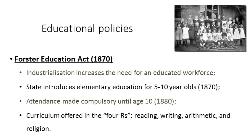This is because the state spent no money on education and did not feel it was its role to do so. In 1870, this all changed with the implementation of the Forster Education Act. Industrialisation had increased the need for an educated workforce, and so the state introduced elementary education for five to ten year olds. Attendance was made compulsory until age ten in 1880, and the curriculum offered a very basic understanding of what was known as the four R's — reading, writing, arithmetic and religion — so very basic literacy, numeracy skills, and a basic understanding of Christian doctrine.